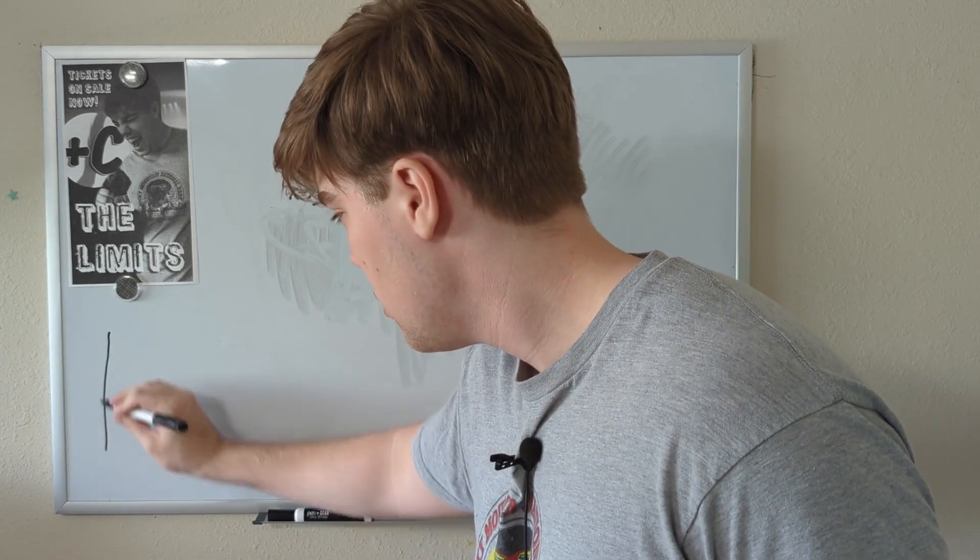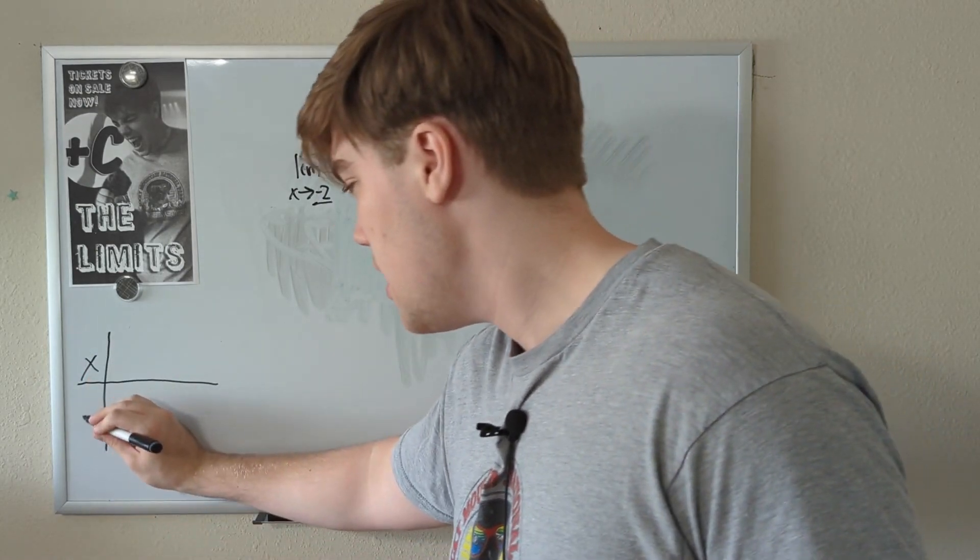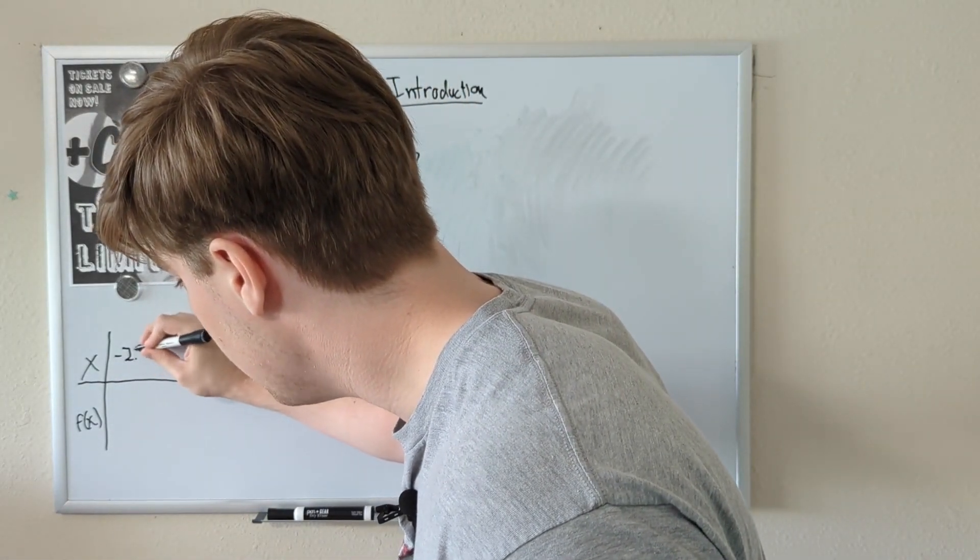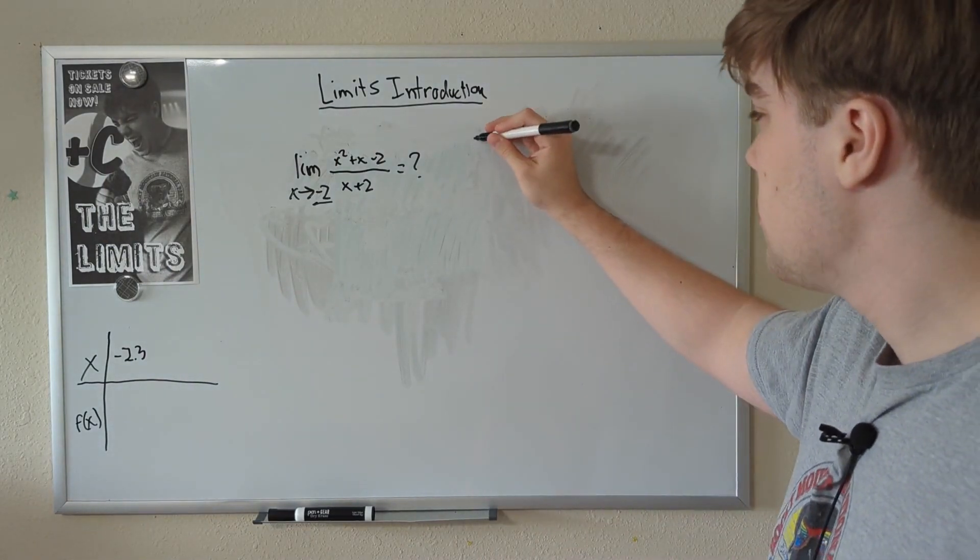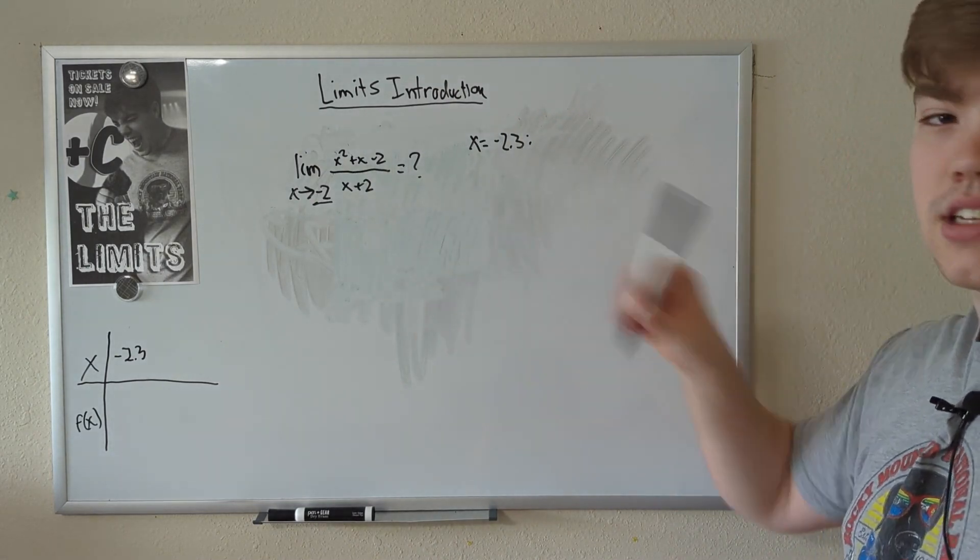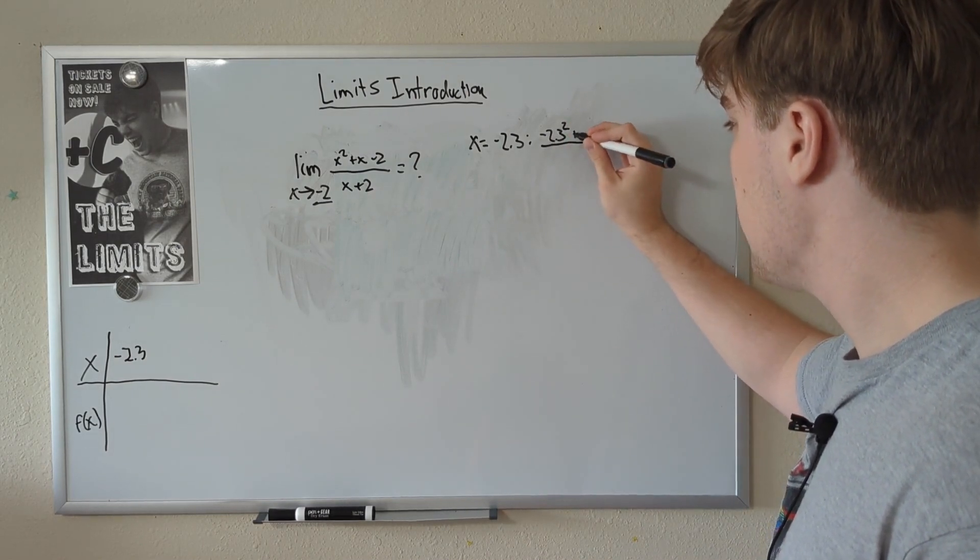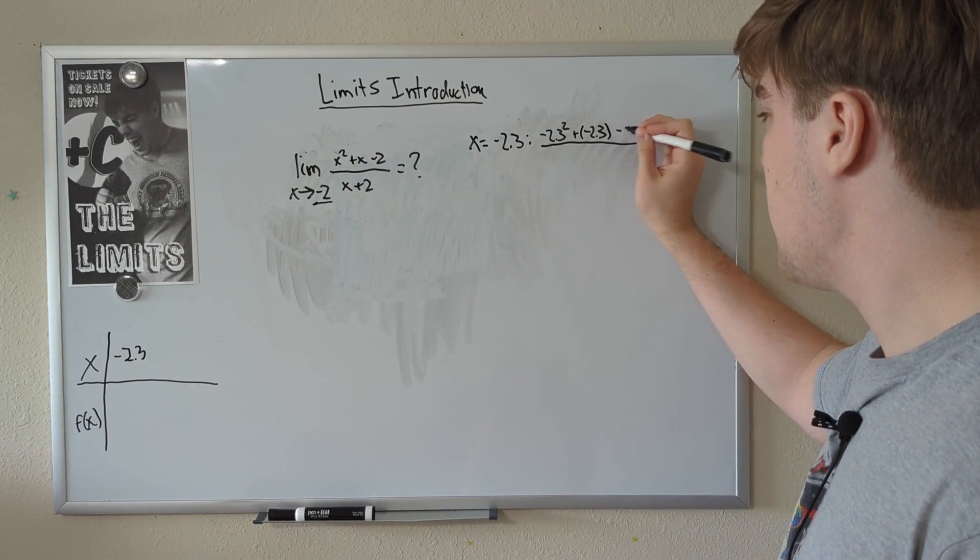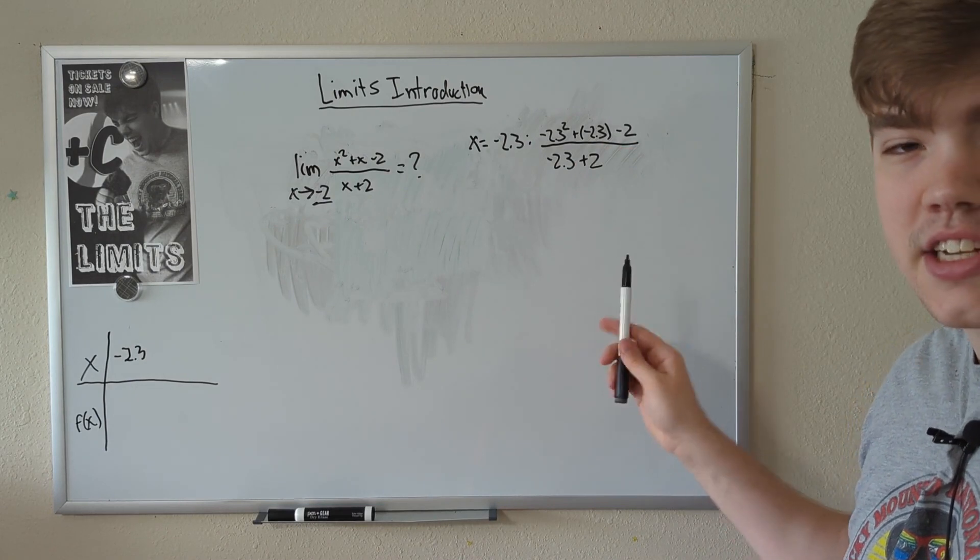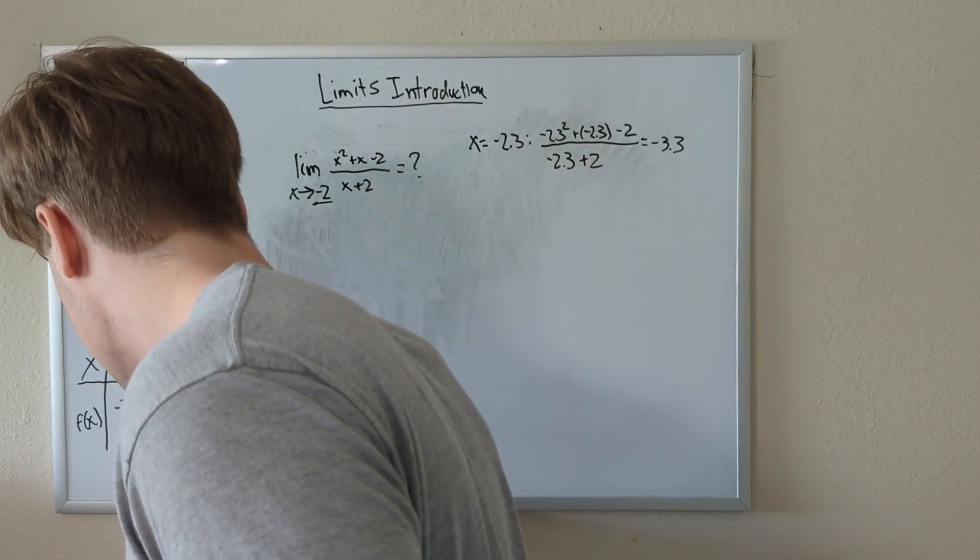Over here, I'm going to draw a little chart of what numbers we used and what limit we got. So, we're going to write our x, whatever we plugged in, and our f of x, whatever the output is. First, we're going to try negative 2.3. So, if we plug in x is equal to negative 2.3, all we have to do is replace every x in here with negative 2.3. So, this will equal negative 2.3 squared plus a negative 2.3 minus 2 divided by negative 2.3 plus 2. I'm not going to do all the simplification here, but what this ends up equaling is negative 3.3. So, let's write that down over here, negative 3.3.